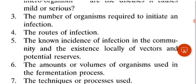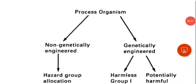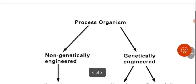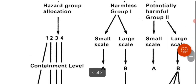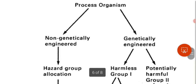Based on these points we determine how hazardous and dangerous the microorganism is. To know the containment level needed — meaning how to prevent cell escape from the fermenter — we refer to a flowchart that tells us how strictly containment must be applied.